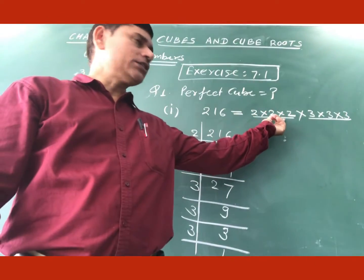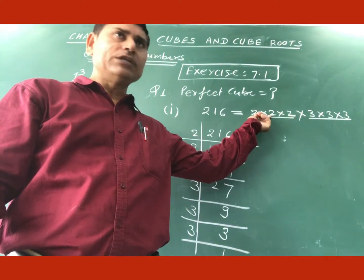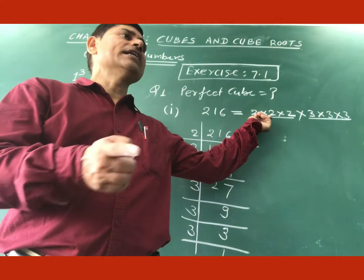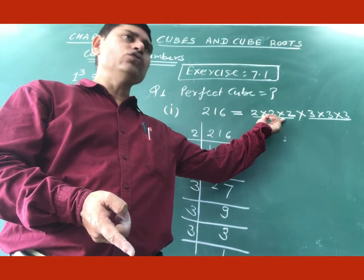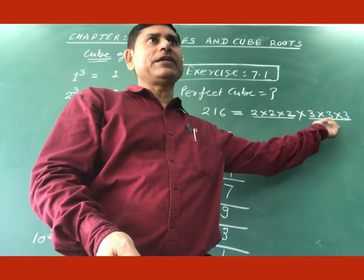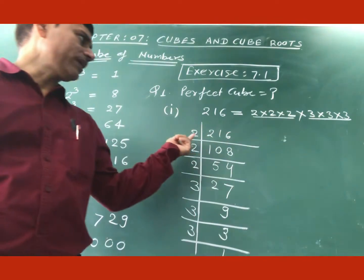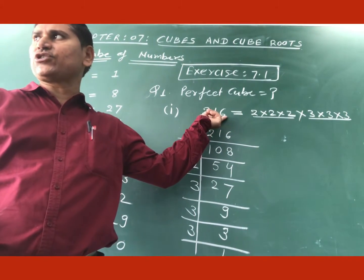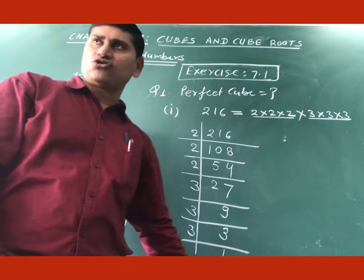But if this triplet is incomplete, if here is only 2 times, then you can say that this number is not a perfect cube. But here is 2 three times, 3 three times, means triplet is completed. Here, so you can say that 216 is a perfect cube.